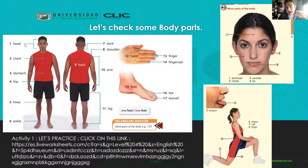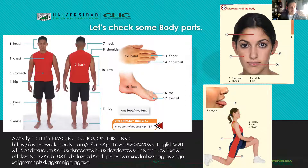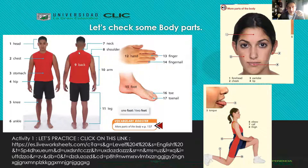Number one is 'head' - cabeza. Number two is 'chest' - el pecho. Number three is 'stomach' - the CH sounds like a K, stomach - estómago. Number four: 'hip' - cadera. Number five: 'knee' - the K is silent, knee - rodilla. Number six: 'ankle' - tobillo. Number seven: 'neck' - cuello.